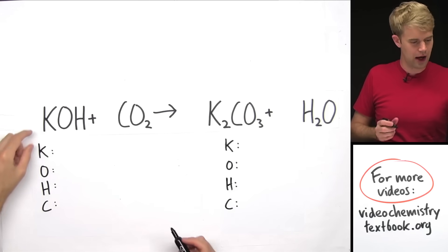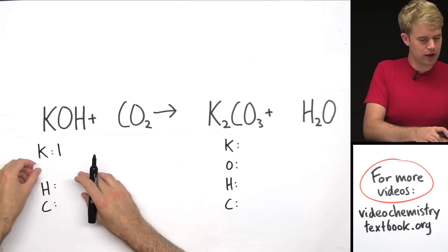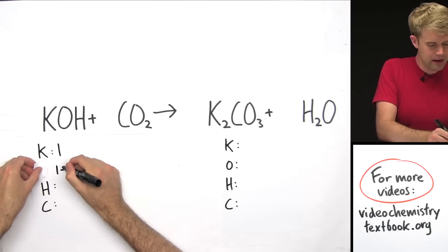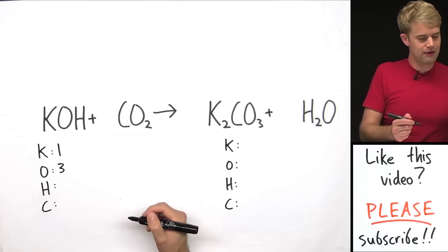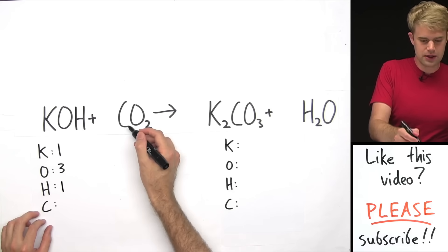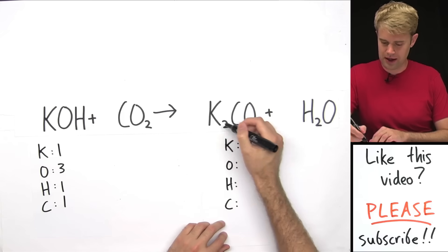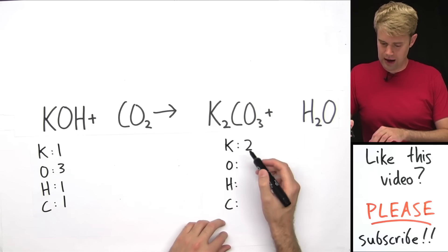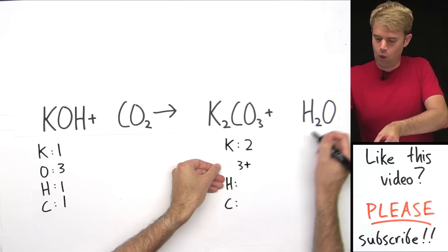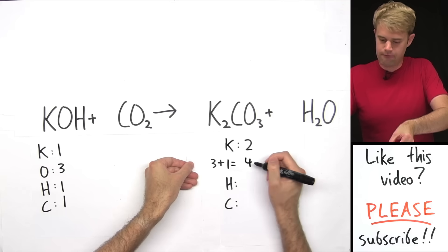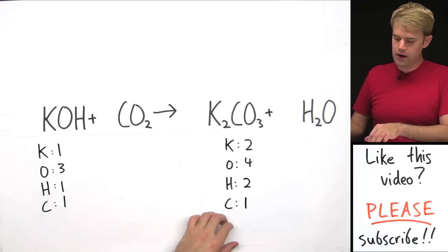Over here for potassium we have two because we've got K₂. For oxygen, we have three and one giving four total. We have H₂ so two hydrogens, and one carbon. The carbons balance, but we've got to add some coefficients to change everything else. Oxygen is in every compound so I'm going to leave that for later and start with potassium.